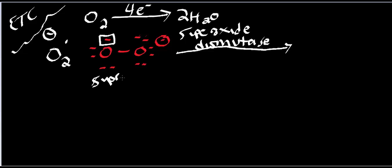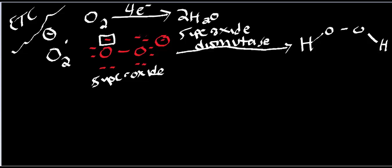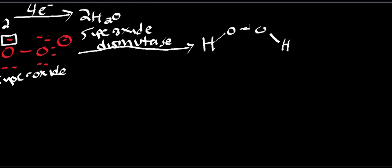The first enzyme in this pathway is called superoxide dismutase, and the molecule I just drew is a superoxide. Superoxide dismutase is going to form a molecule called hydrogen peroxide. Now, if you look at hydrogen peroxide, you notice a peroxide linkage, which could potentially undergo a homolytic bond cleavage — generating a hydroxide radical, which is also very reactive. So hydrogen peroxides are bad to have in your body.